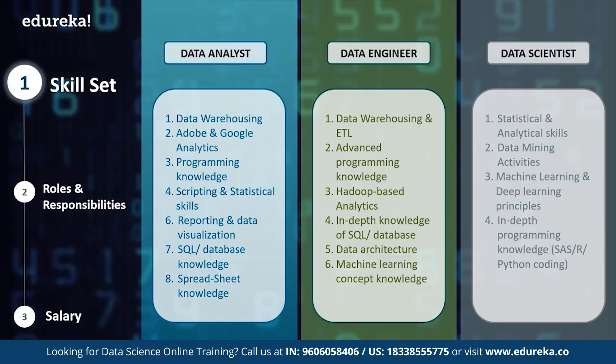A data scientist needs to be a master of both worlds — data, stats, and math — along with in-depth programming knowledge of machine learning and deep learning. The job description for an ideal data scientist includes statistical and analytical skills, various data mining activities, machine learning and deep learning principles and algorithms, and in-depth programming knowledge in languages such as SAS, R, or Python.